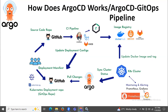ArgoCD reports deviations and provides visualization to help developers manually or automatically sync the live state to the desired state. ArgoCD can automatically apply any changes to the desired state in the Git repository to the target environment, ensuring applications remain in sync. That covers how ArgoCD works and the ArgoCD GitOps pipeline.